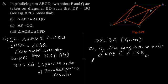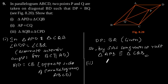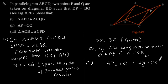Hence the first part is proved. Second part: AP is equal to CQ. As we have proved that triangle APD is congruent to triangle CQB, AP is equal to CQ by CPCT.